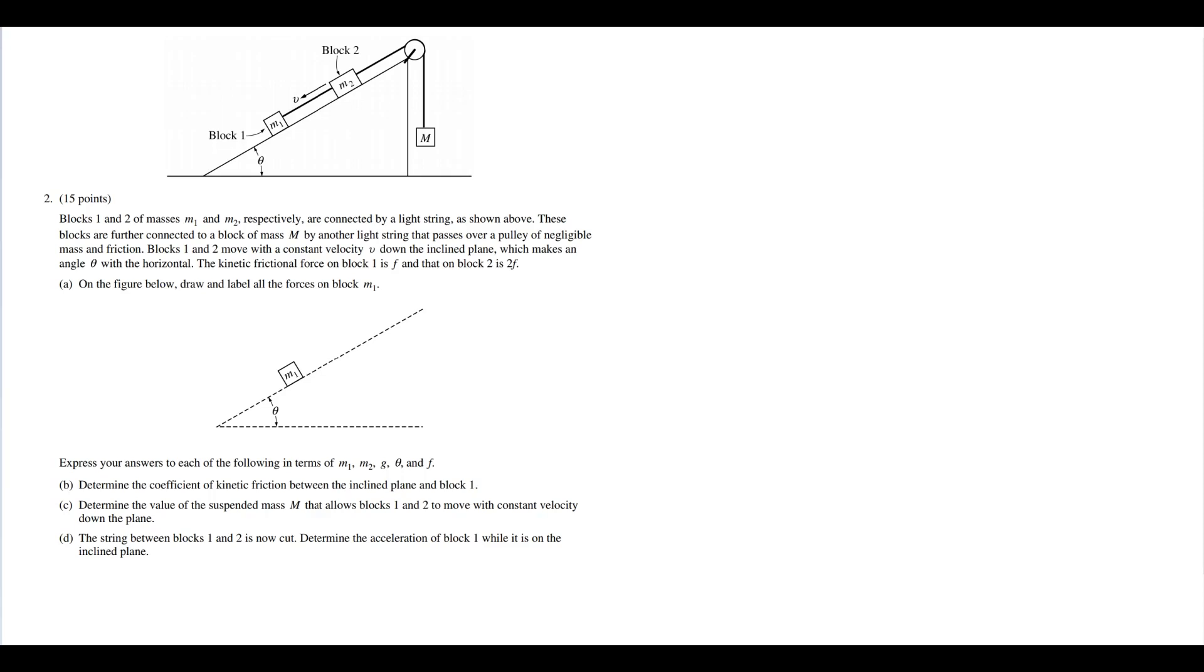Part A: On the figure below, draw and label all the forces on block m1. Okay, so we of course have gravity, so m1g. Then we have our normal force, that's fn or just n. Then we have a friction force f. So that's our diagram.